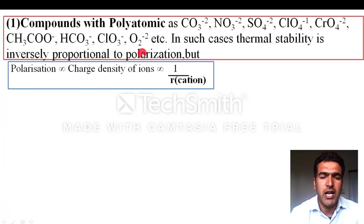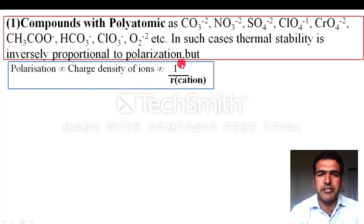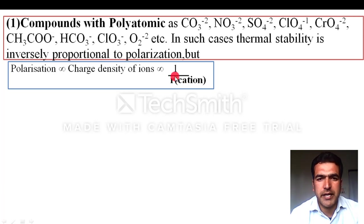Thermal stability is inversely proportional to polarization. Polarization depends on charge density and is directly related to charge density and inversely related to the radius of the cation. If the cation radius is large, polarization is less; if the cation radius is small, polarization is more.